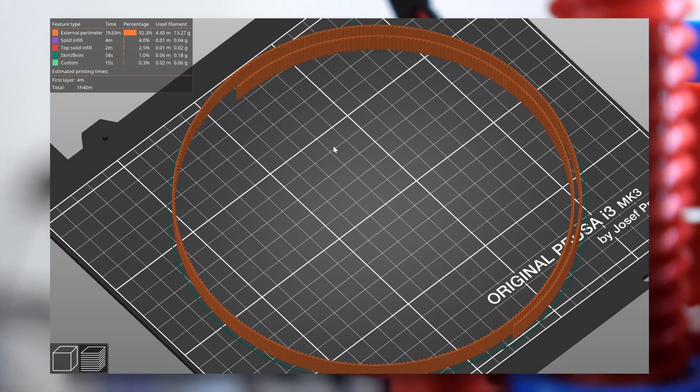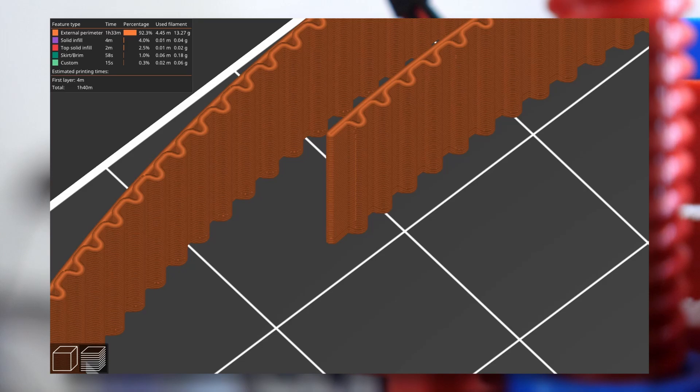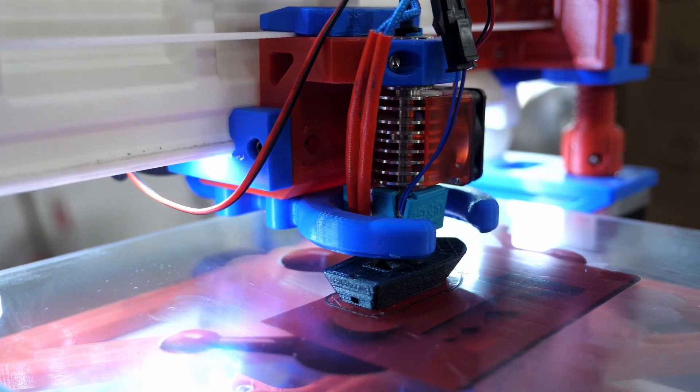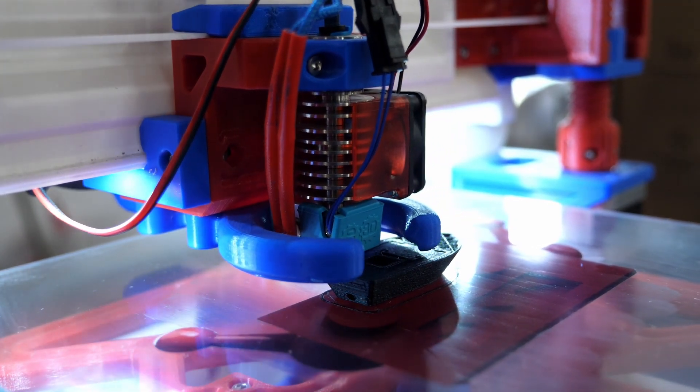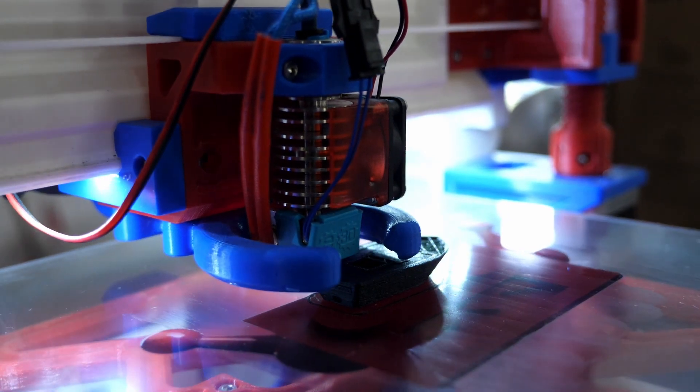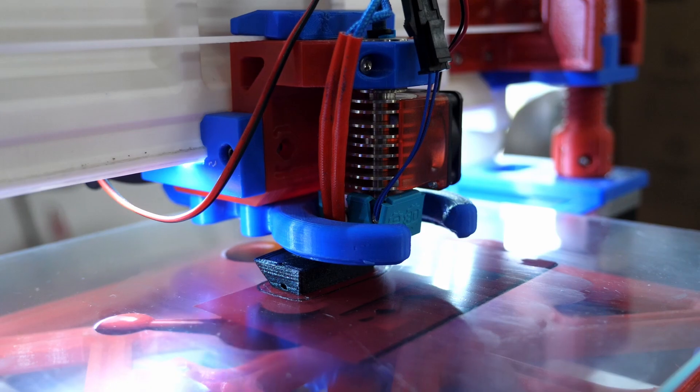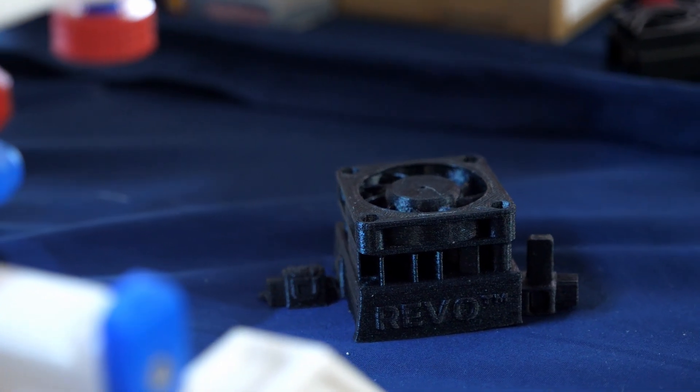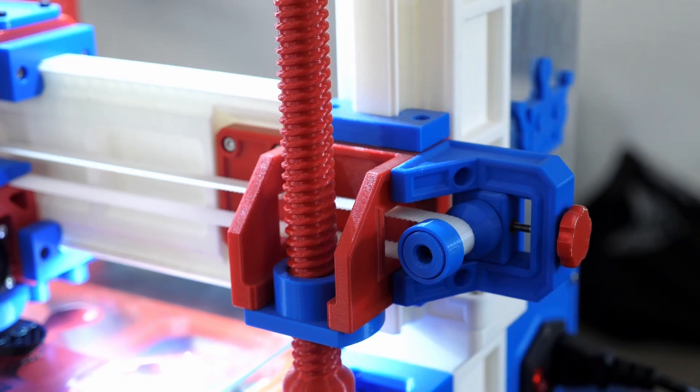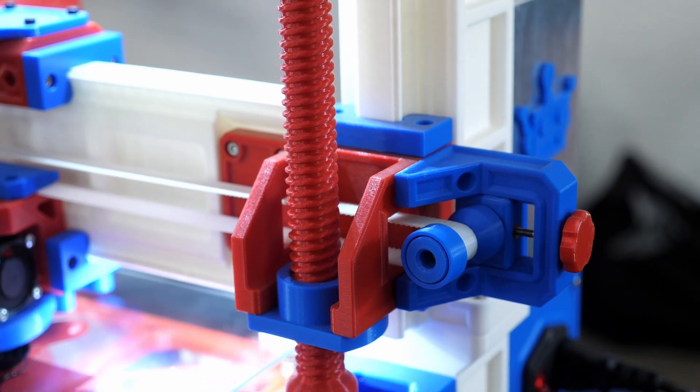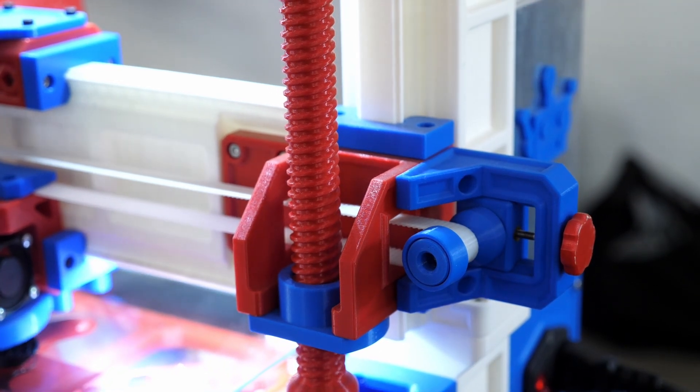John designed the model so that it can be printed in vase mode to get really smooth surfaces. Since a TPU printed part is, of course, not reinforced like a regular belt, it's not as stiff, but if you don't print with high acceleration, it still does a remarkable job. John only told me that he has to release the tension regularly because otherwise it stretches over time.